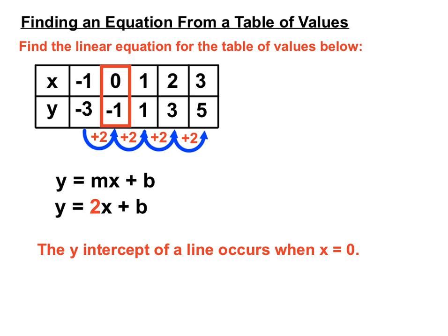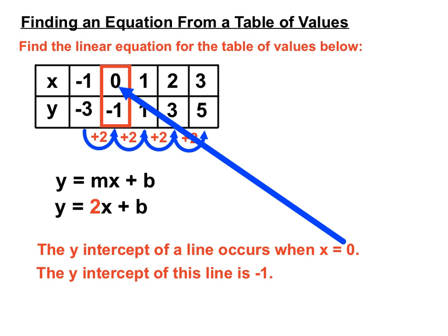And that box there on our table of values indicates what happens when X is zero. When X is zero we have a Y value of minus one. So having a good stare at that, realising that the Y intercept of a line occurs when X equals zero. Can you see what our Y intercept might be? Our Y intercept is actually minus one. So if we've got an X of zero in our table of values, that'll give us a great clue as to what the Y intercept is.